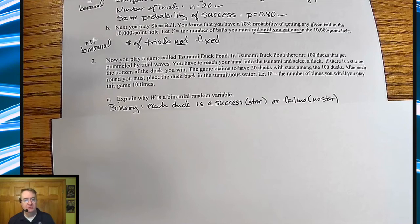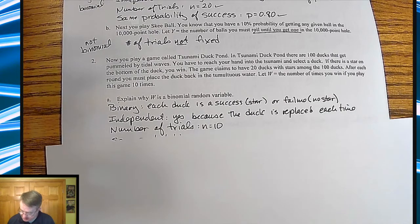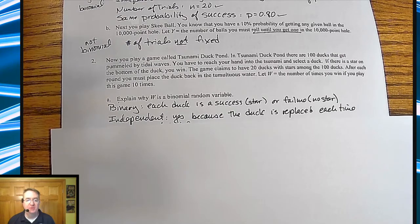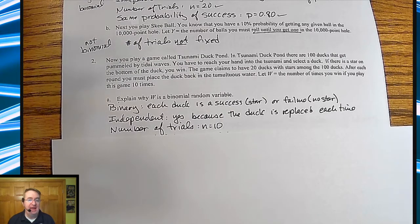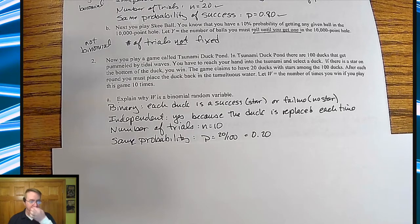You either win or you lose, so you get a star or you don't. It's independent because the duck is replaced each time. Number of trials is fixed as 10. And we're assuming that since the probability is, since they're saying it's 20 out of 100, it's going to be 20%.